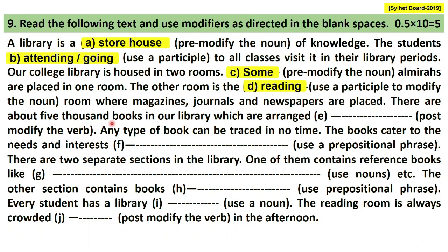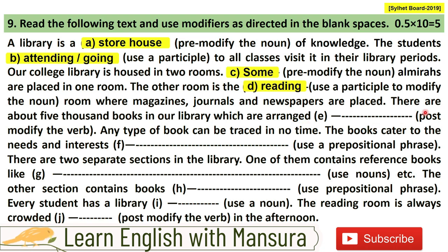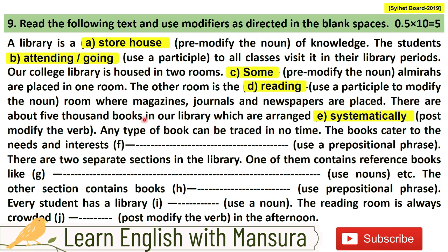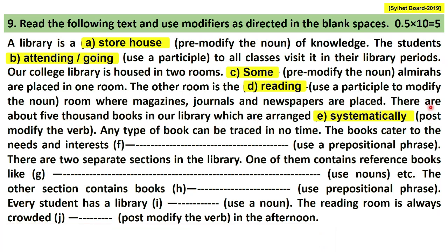There are about 5000 books in our library, which are arranged — this uses a post-modified verb. 'Which are arranged' is the post-modifier. We have to use a post-modifier here, and 'systematically' completes it. There are about 5000 books in our library which are arranged systematically.